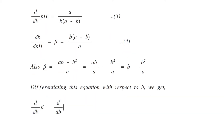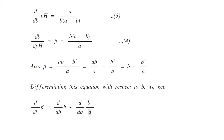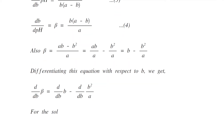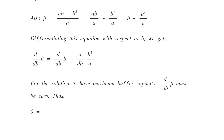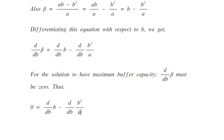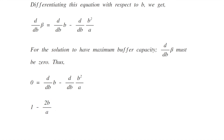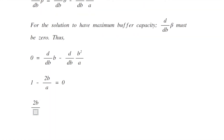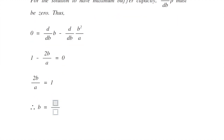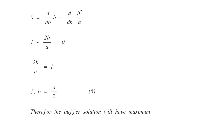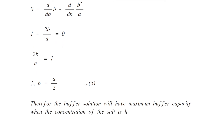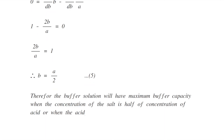Differentiating beta with respect to b again, we get d(beta)/db equals 1 minus 2b/a. For the solution to have maximum buffer capacity, the change in beta with respect to concentration must be zero — the pH should not change. Therefore d(beta)/db equals zero, giving 0 equals 1 minus 2b/a, so 2b/a equals 1, and therefore b equals a/2. This is equation number five. Therefore the buffer solution will have maximum buffer capacity when the concentration of salt is half the concentration of acid, or when the acid is half neutralized.